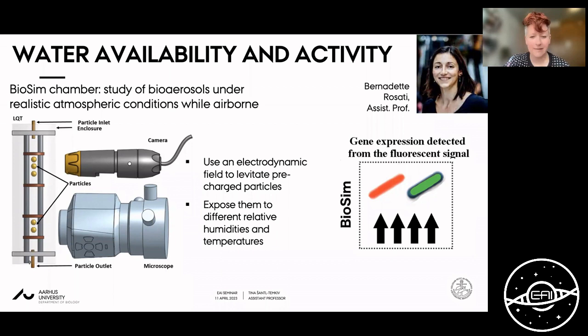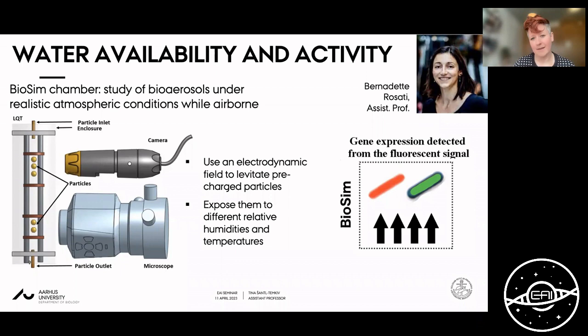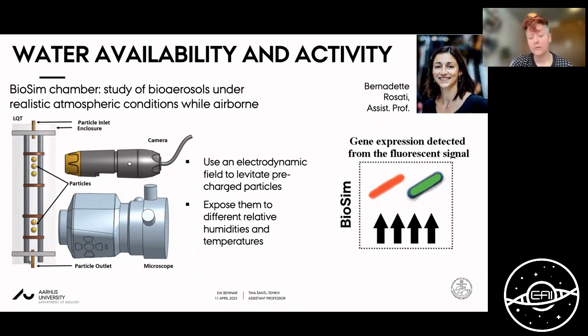We are now building a biosim chamber — an electrodynamic balance — where we can charge bacteria and keep them suspended in an electric field, observe them with a camera or microscope under realistic atmospheric humidity and temperature conditions, coupled with reporter strains that express fluorescent signals upon specific gene expression. This would allow us to directly demonstrate metabolic activity under realistic atmospheric conditions in real time. This was the part on adaptations to atmospheric dispersal, expanding our understanding of the atmosphere as a possible microbial habitat. Now I will move to cloud formation and how atmospheric microorganisms can impact clouds — and potentially serve as a novel biosignature.